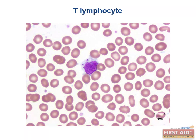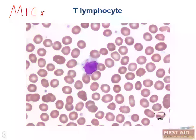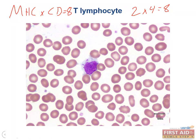An easy way to remember which MHC goes with which cluster of differentiation for your T cells is this equation: your MHC times your CD always equals 8. MHC class 2 and CD4 go together — 2 times 4 equals 8. And the same goes for MHC class 1 and CD8 — 1 times 8 equals 8. Regardless of the type, T cells usually need a co-stimulatory signal to be activated, which can be provided by CD28 on your T cell and B7 on your APC, or the CD40L and CD40 interaction discussed in previous chapters.